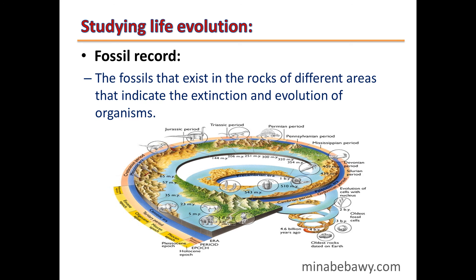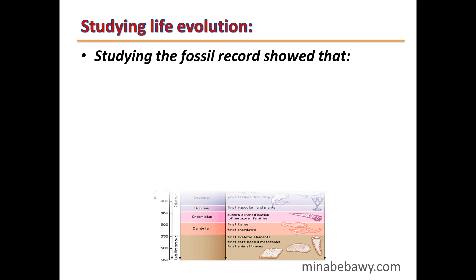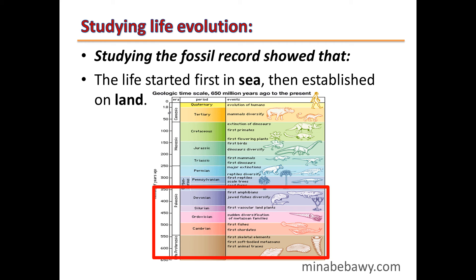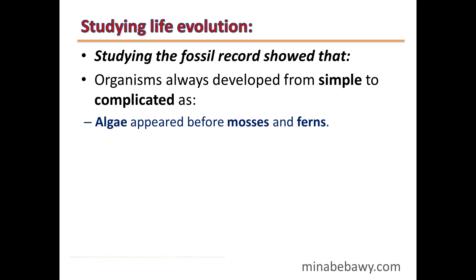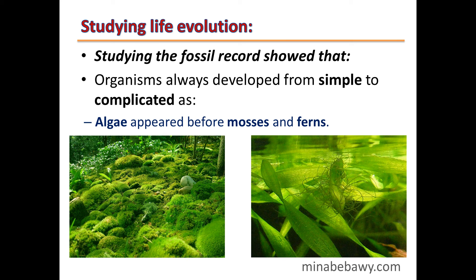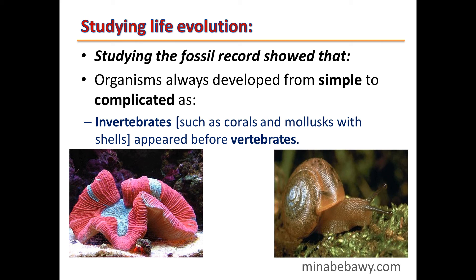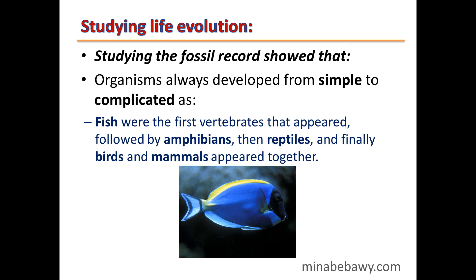Studying life evolution: the fossil record refers to fossils that exist in rocks of different areas, indicating the extinction and evolution of organisms. Studying the fossil record showed that life started first in the sea, then became established on land. Organisms always developed from simple to complicated — algae appeared before mosses and ferns, angiosperms appeared after gymnosperms, invertebrates such as corals and mollusks appeared before vertebrates, fish were the first vertebrates, followed by amphibians, then reptiles, and finally birds and mammals appeared together.